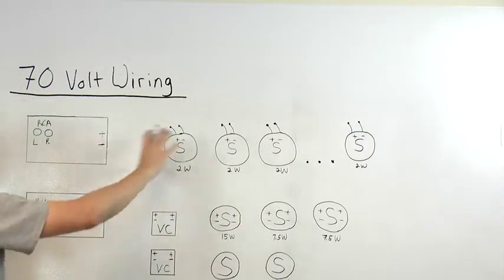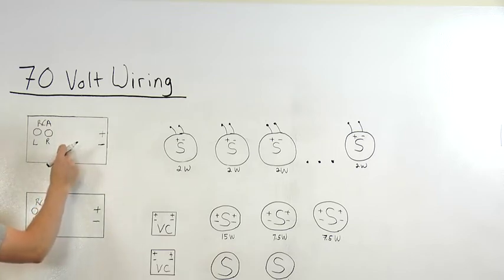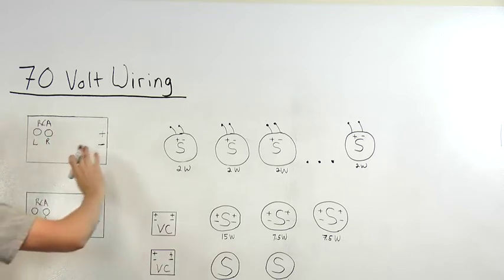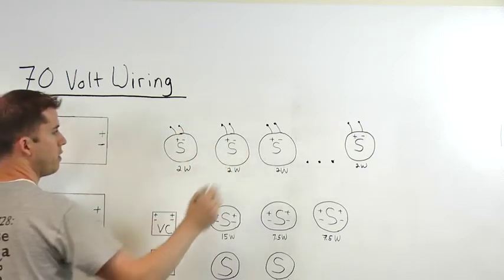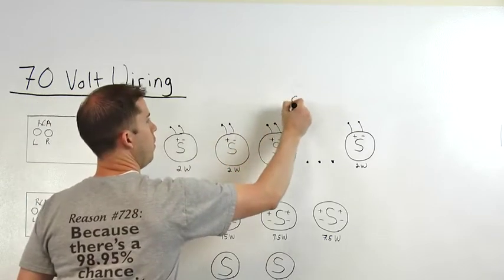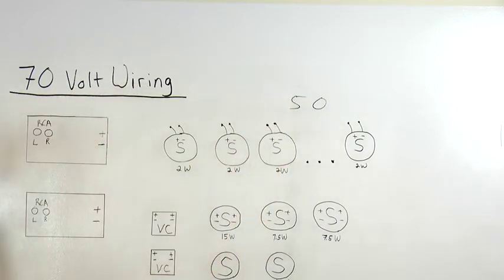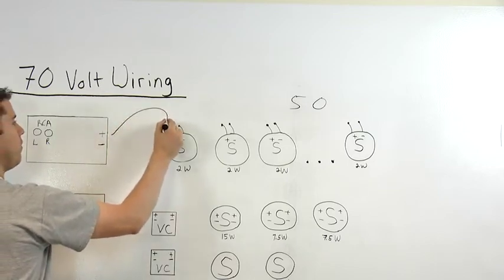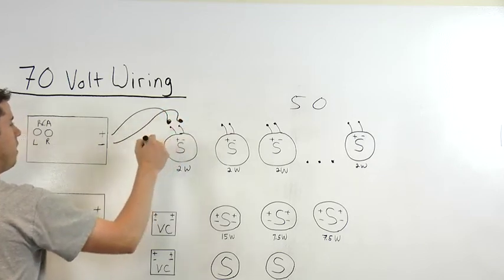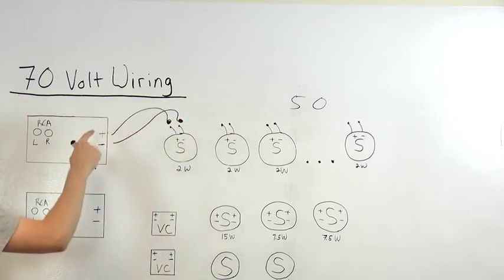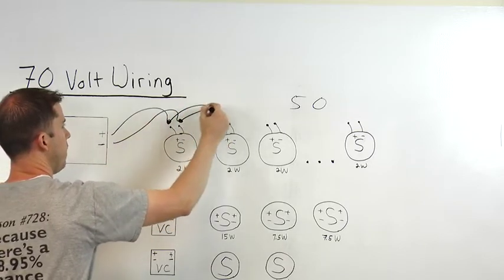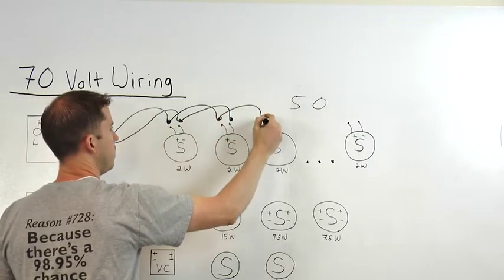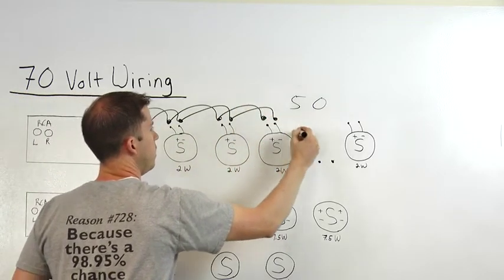For our first example, we're going to use a very classic 70-volt wire setup, where we have a single amplifier with stereo input feeding a whole bunch of speakers in line, all with flying leads. In this example, we're saying that all the tap settings are at 2 watts each. So we're going to say the size of this job is going to require 50 speakers. Now the important thing to remember for 70-volt wiring is that it's all done in parallel, meaning all positive goes to positive, all negatives go to negatives. So we'll start from the amplifier to the first speaker, positive to positive, negative to negative. And then from there, we'll go positive to positive, negative to negative, to each speaker down the line.